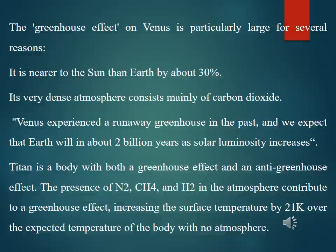The greenhouse effect on Venus is particularly large for several reasons. Number one: it is nearer to the sun than Earth by about 30%. Number two: its very dense atmosphere consists mainly of carbon dioxide. Venus experienced a runaway greenhouse in the past, and we expect that Earth will experience one in about 2 billion years as the solar luminosity increases.